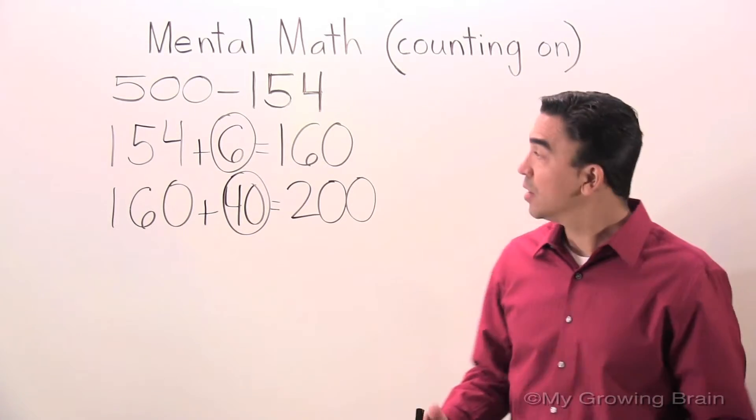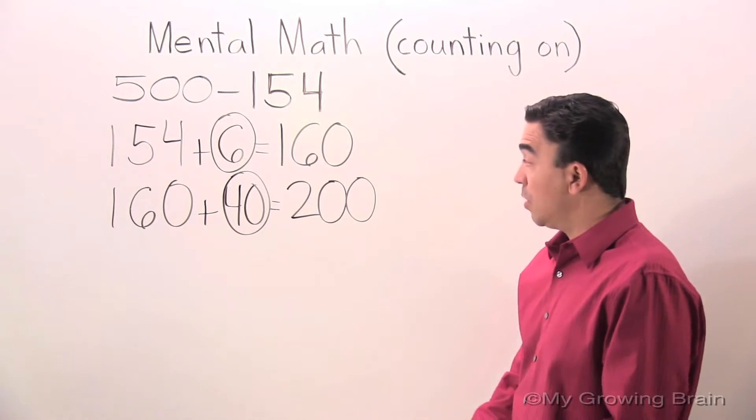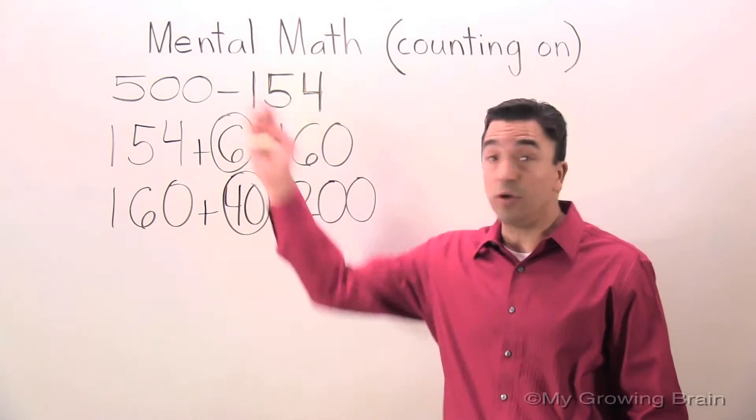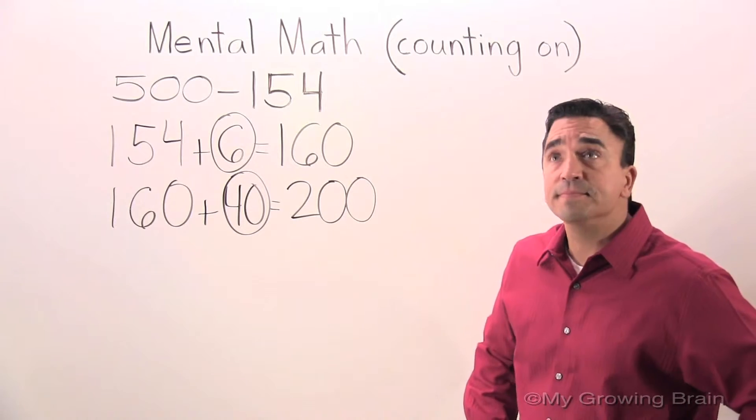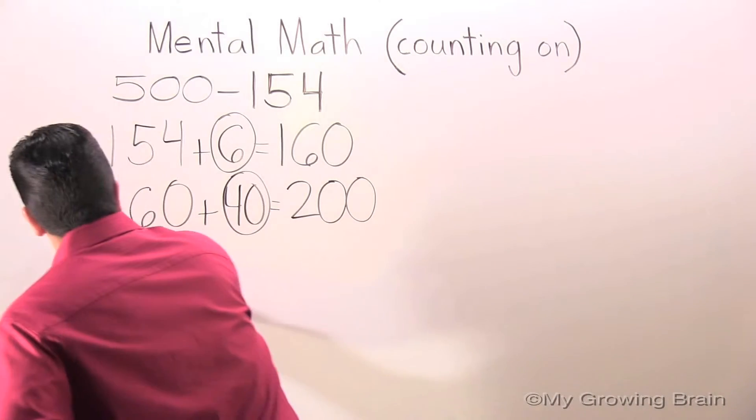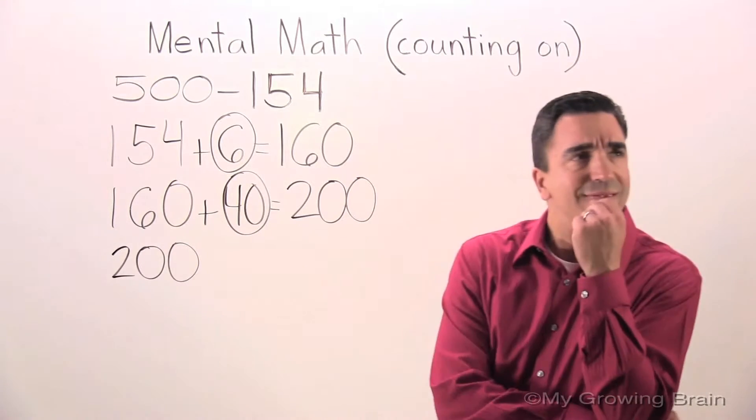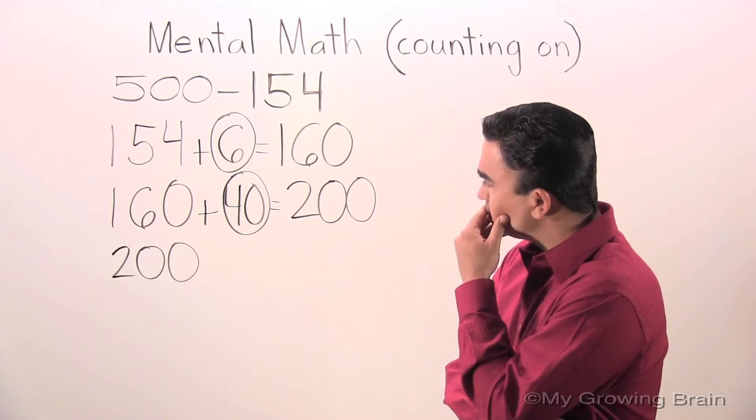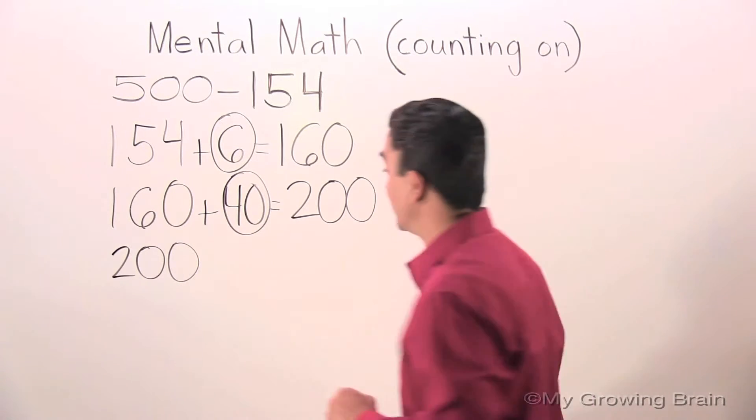Now we want 500. So what are we going to add to 200 to get us to 500? 200 plus what equals 500? 200 plus 300 equals 500.